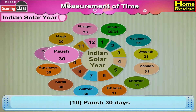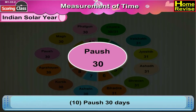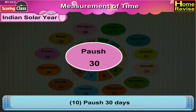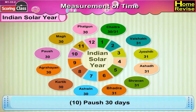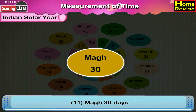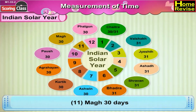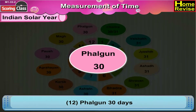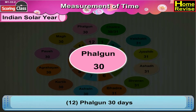The tenth month is Paush, which has 30 days. The eleventh month is Magh, which has 30 days. The twelfth month is Fargun, which has 30 days.